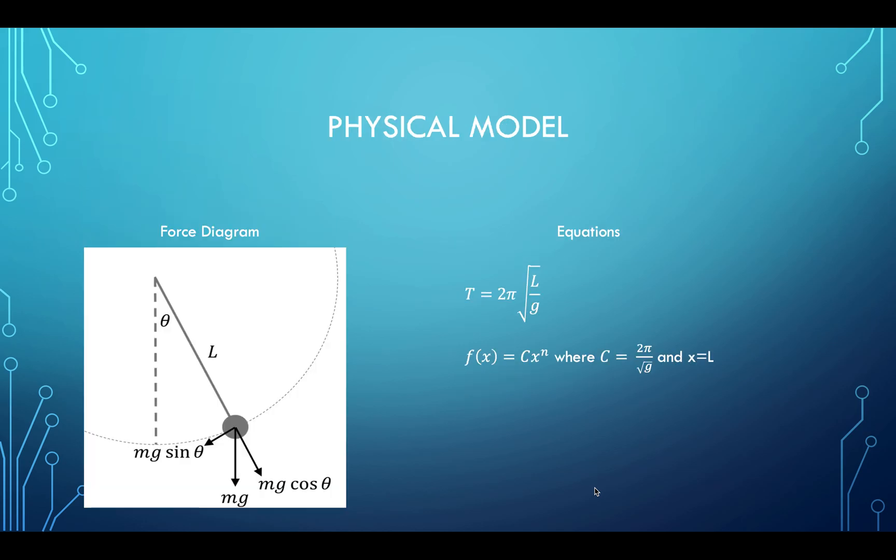The physical model: on the left we have a force diagram of our setup which indicates all the forces and angles. On the right we can see the equations we are going to use. The first one is used to calculate the theoretical value of the period, and we will be using that to compare it with the value that I calculated after averaging out 20 oscillation times. The second equation is used to calculate the uncertainty that is associated with one of the periods, and we will be also comparing that to the standard error which I also derived from averaging the 20 trials.